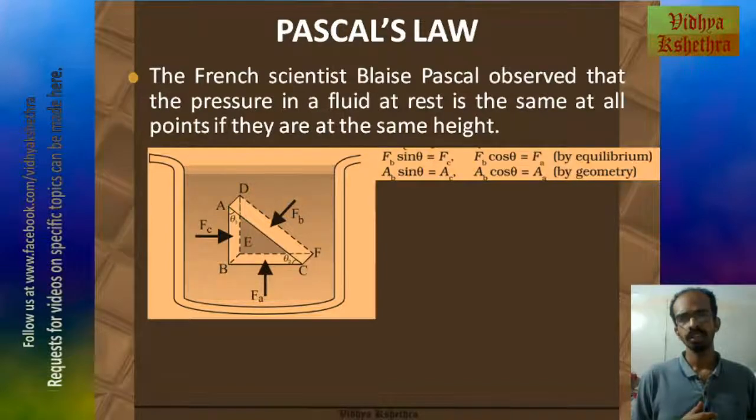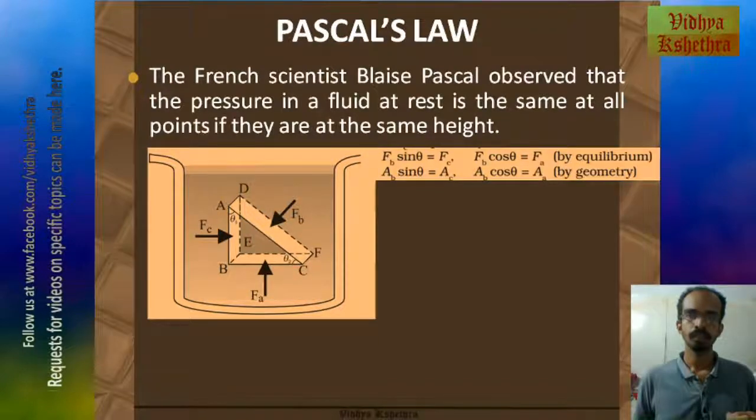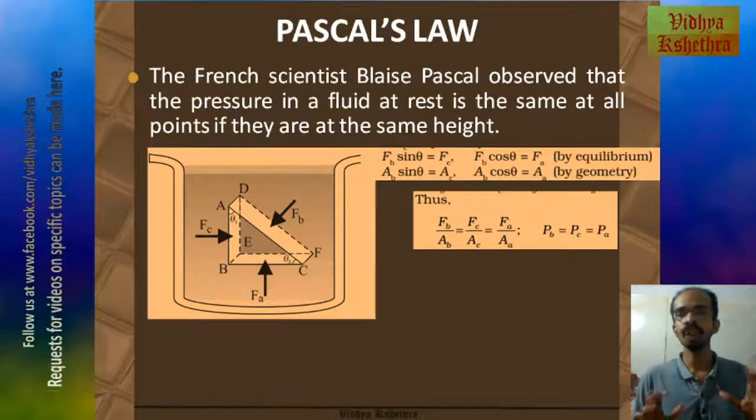From this figure, by equilibrium we can see that FB sin theta equals FC and FB cos theta equals FA. Now by geometry, AB cos theta equals AA. Now if we divide FB by AB, then we get FB by AB equals FC by AC. Similarly, FB by AB equals FA by AA. So we can say that FB by AB equals FC by AC equals FA by AA, or pressure at phase B equals pressure at phase C equals pressure at phase A. This is what Pascal's law states.